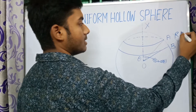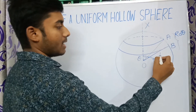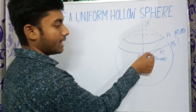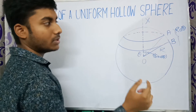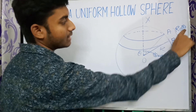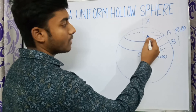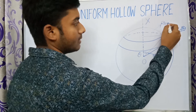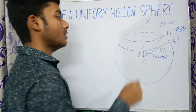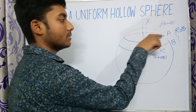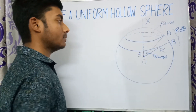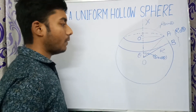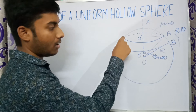The width of the ring is R·dθ, where R is the radius and dθ is the small angle, since arc length s = R·dθ. The radius of this ring is R·sinθ, since the angle is theta. So we can now find the area of this elemental ring.